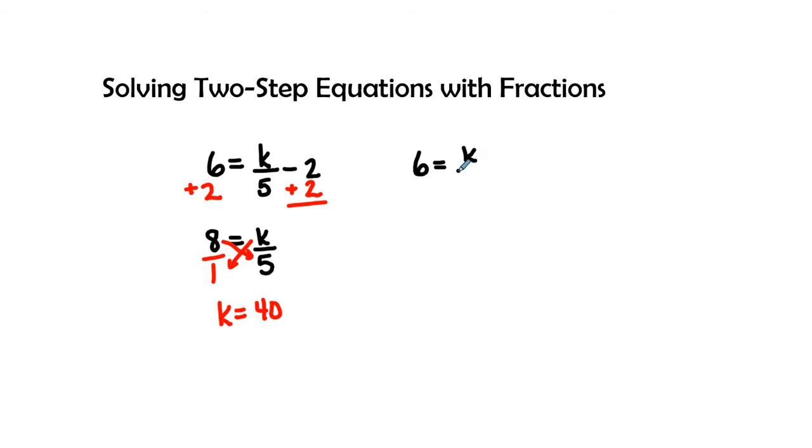So I have k over 5 minus 2. In previous videos I've said how we can get rid of a fraction is to multiply both sides by the common denominator, and in this case the common denominator is 5. So if I can multiply this side by 5 over 1 and multiply this side by 5 over 1 and put this 6 over 1.